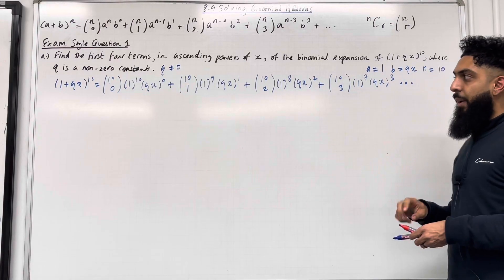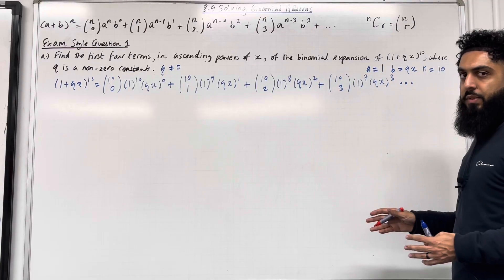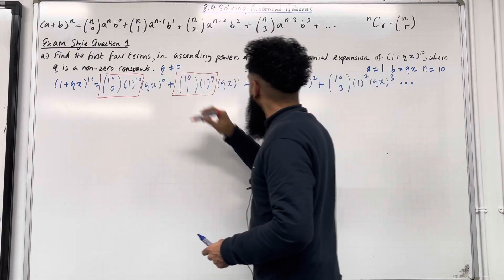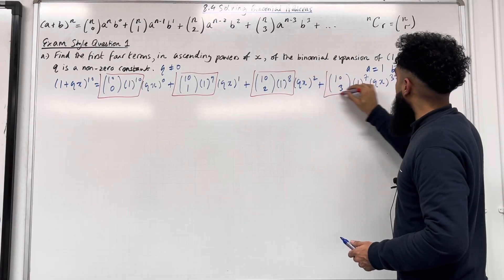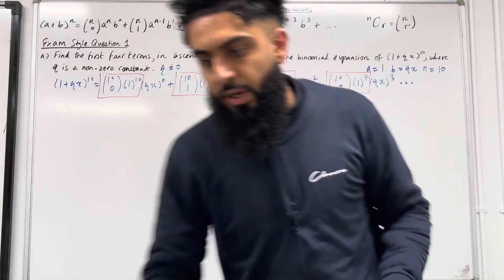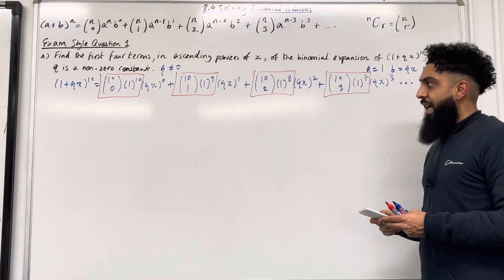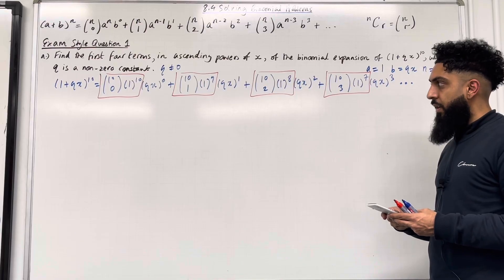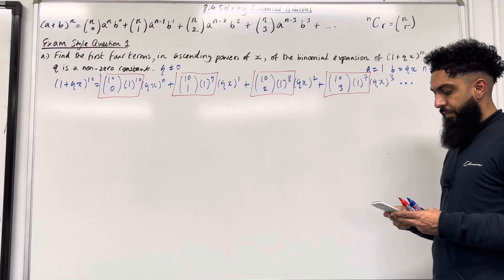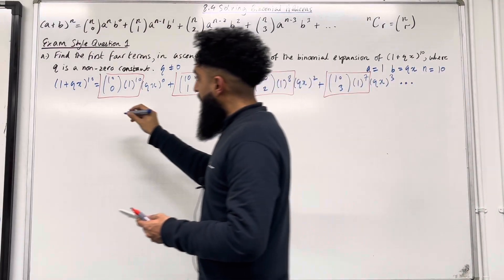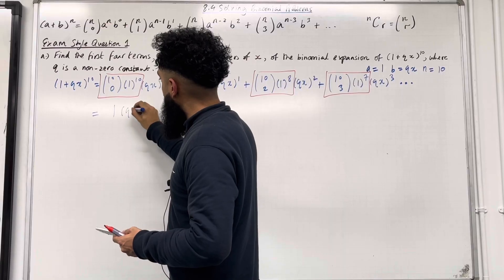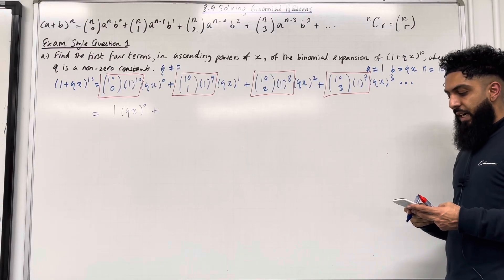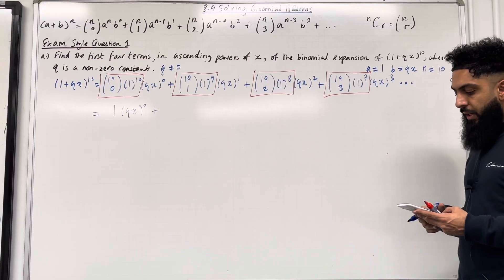Now I'm going to draw boxes around specific parts of these terms — first box, second box, third box, and fourth box — and simplify each. For the first box: 10C0 = 1, multiplied by 1^10 which is just 1. So the first box simplifies to 1. Then (qx)^0, plus the second box: 10C1 = 10, multiplied by 1^9, which is just 10.